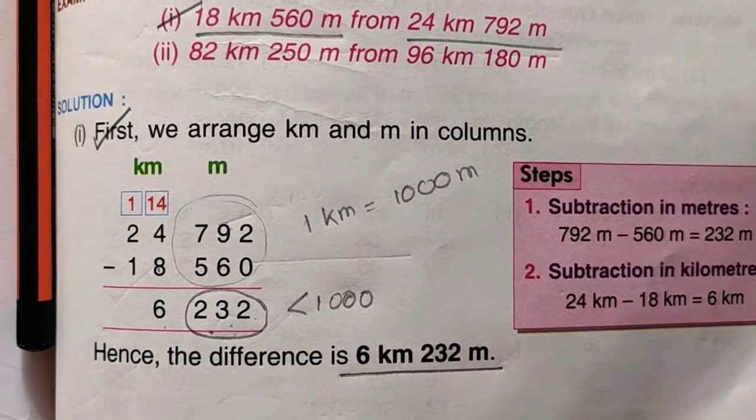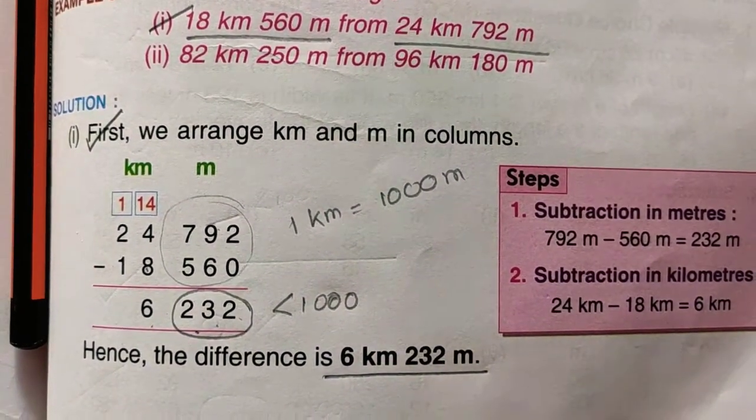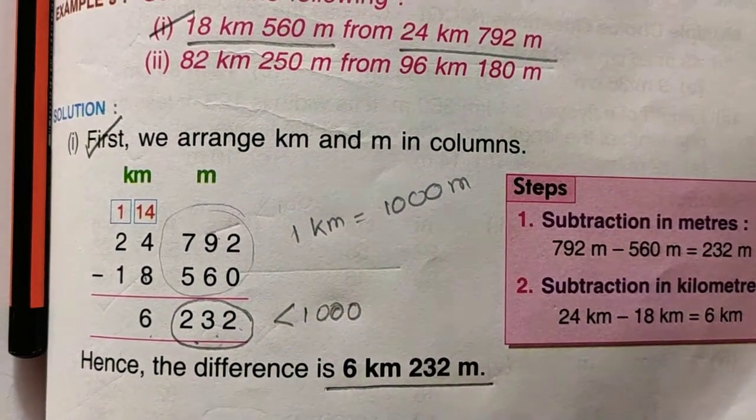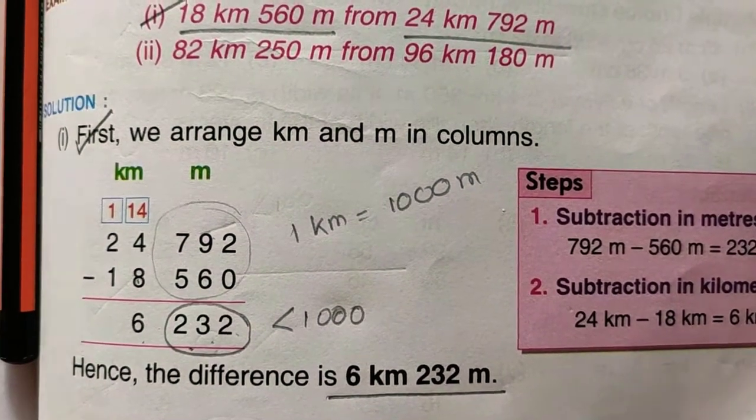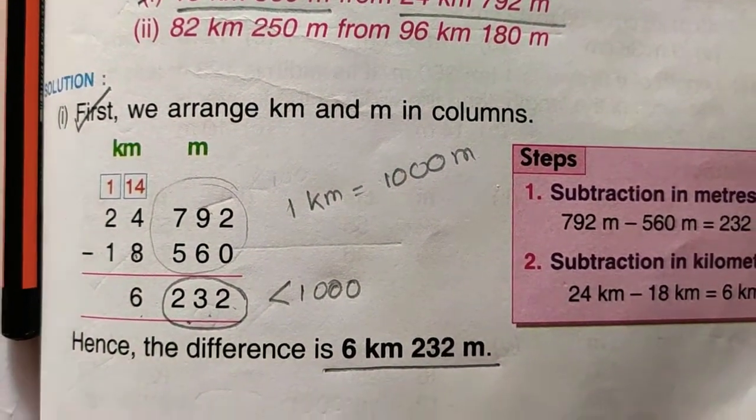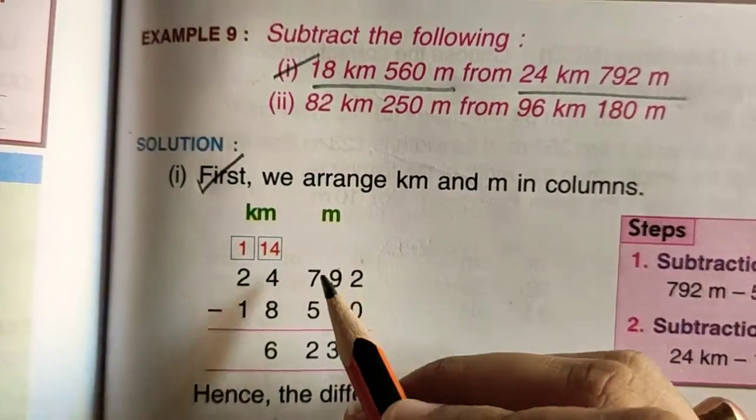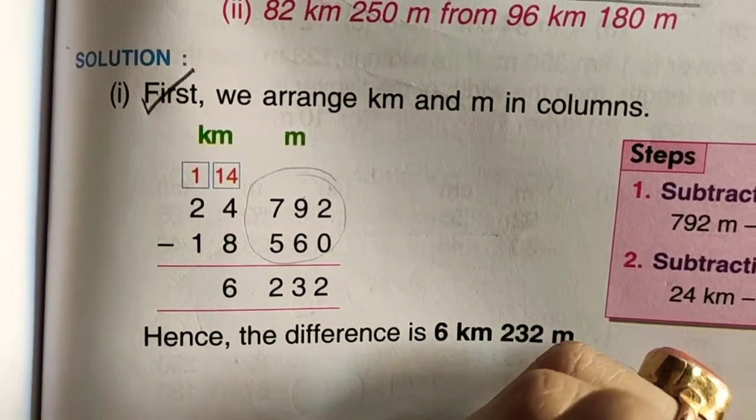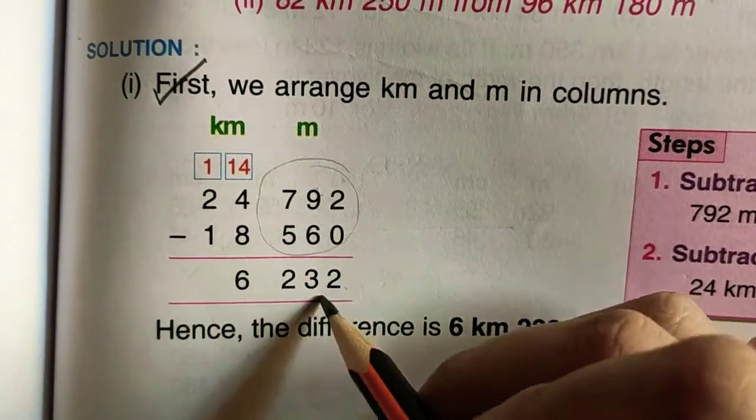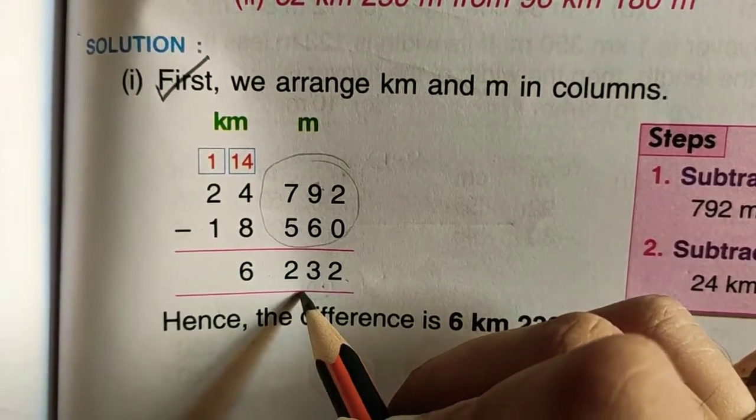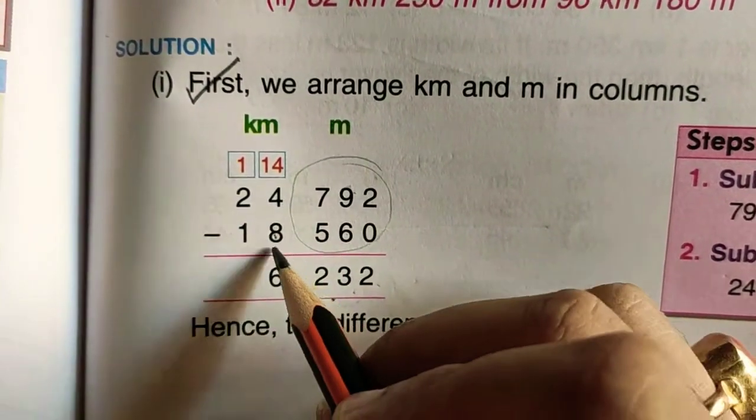Then write the values according to their places, kilometer and meter. So 24 goes in kilometer place, and 18 goes in kilometer place. And 792 and 560 go in meter place. So we made two columns kilometer meter and we place the values column-wise. Now what do we do? We subtract this part. 792 minus 560 gives us 232.